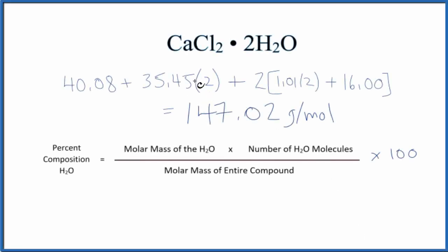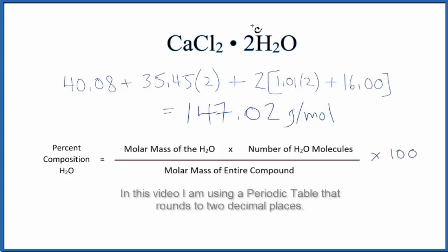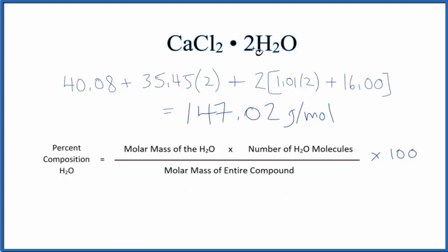In this video, we'll find the percent composition by mass for the water in this calcium chloride dihydrate. To do that, the first thing we do is find the molar mass for the calcium chloride. We add that to the two water molecules, and this is the molar mass for the entire compound, CaCl₂·2H₂O.